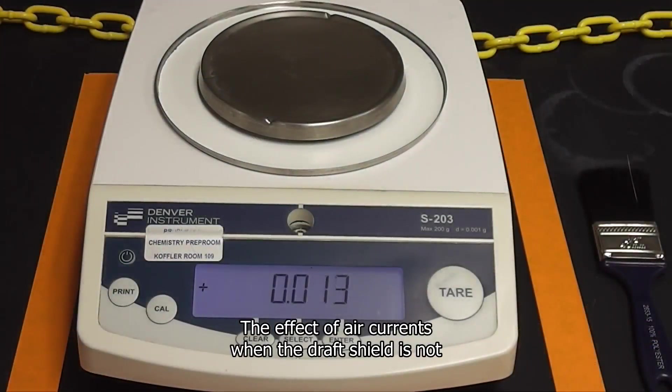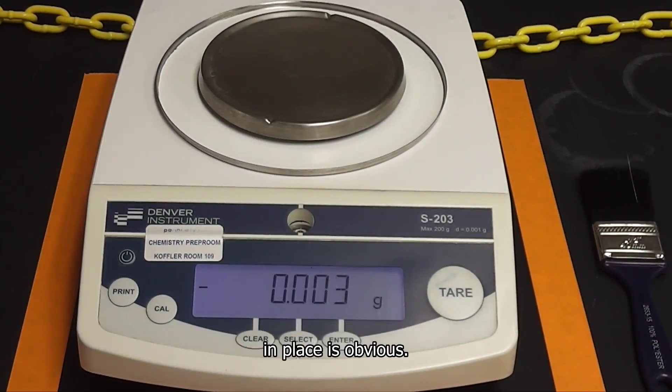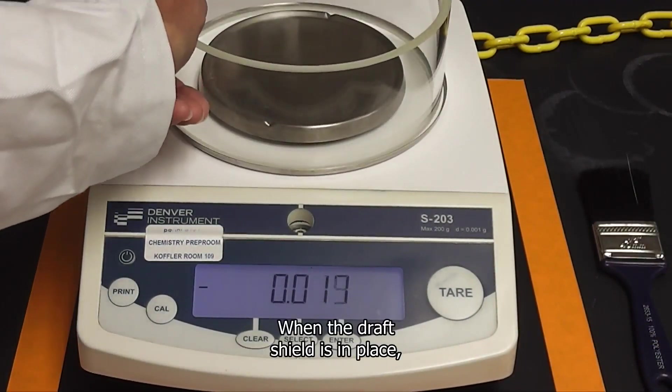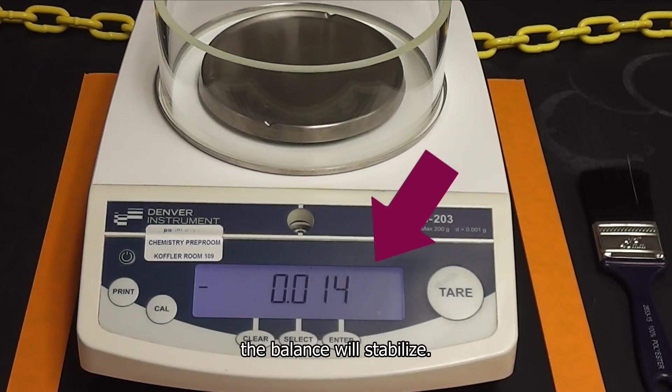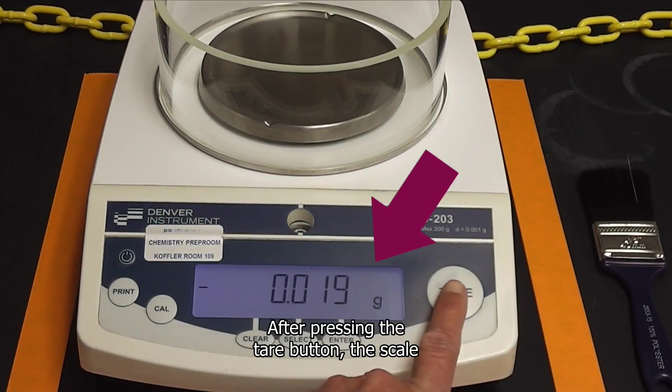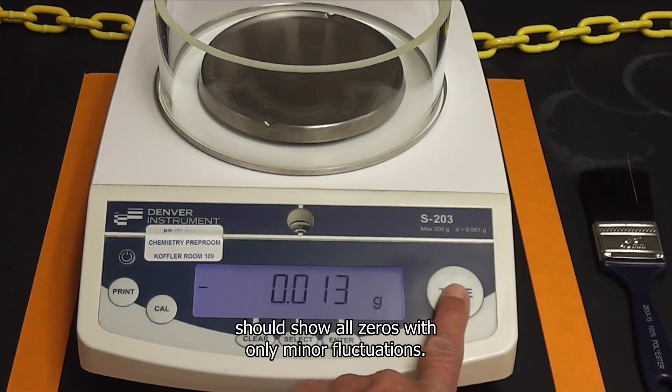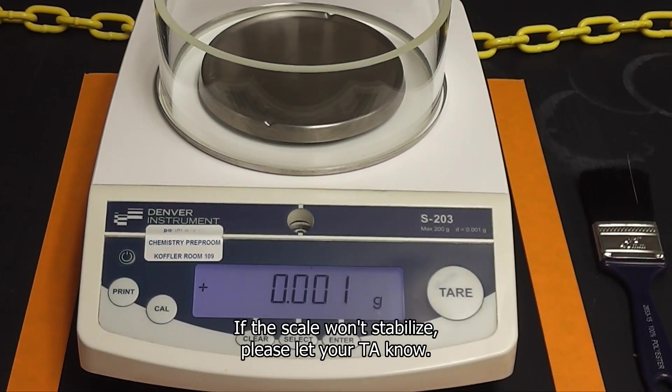The effect of air currents when the draft shield is not in place is obvious. When the draft shield is in place, the balance will stabilize. After pressing the tare button, the scale should show all zeros with only minor fluctuations. If the scale won't stabilize, please let your TA know.